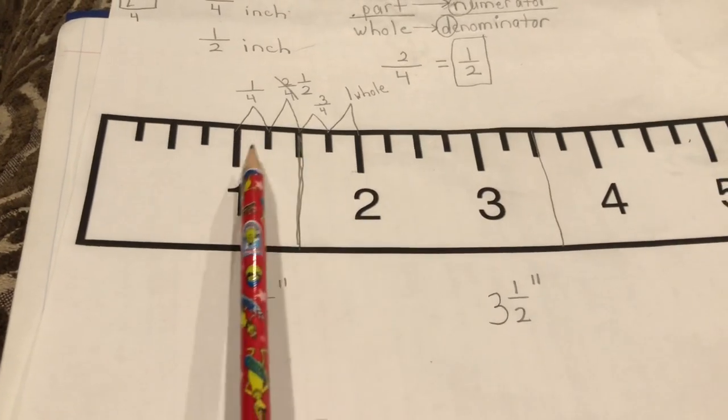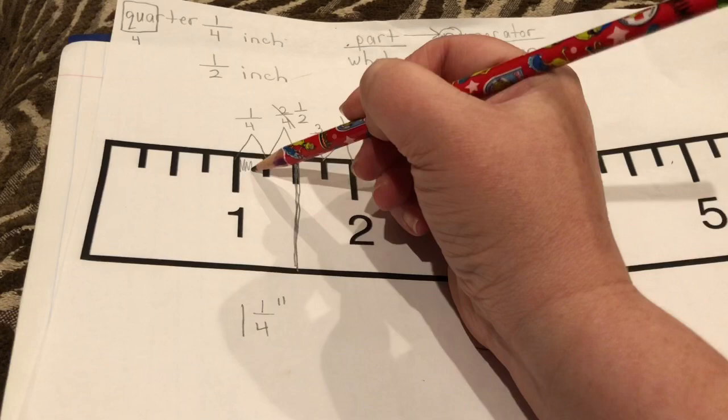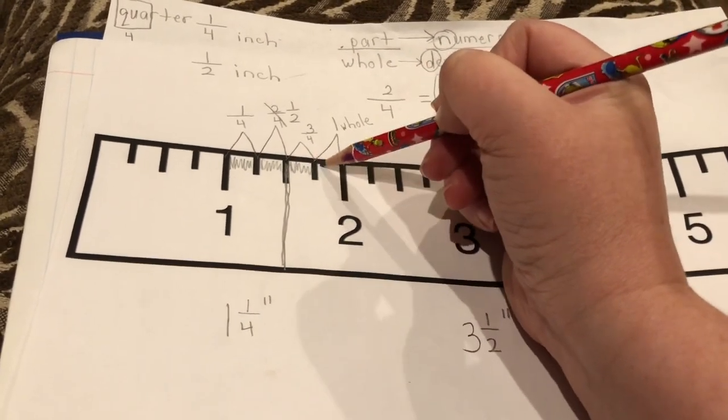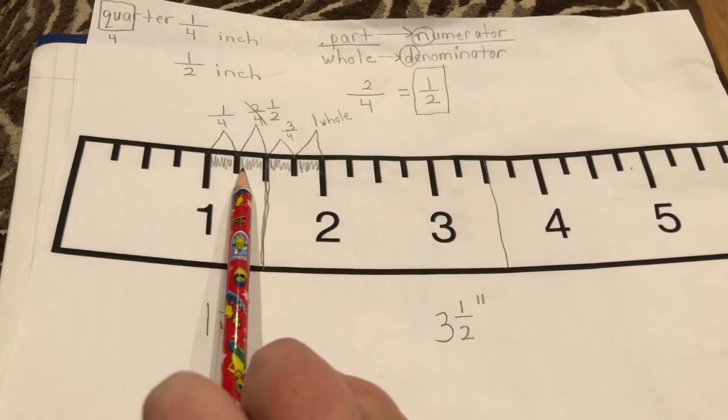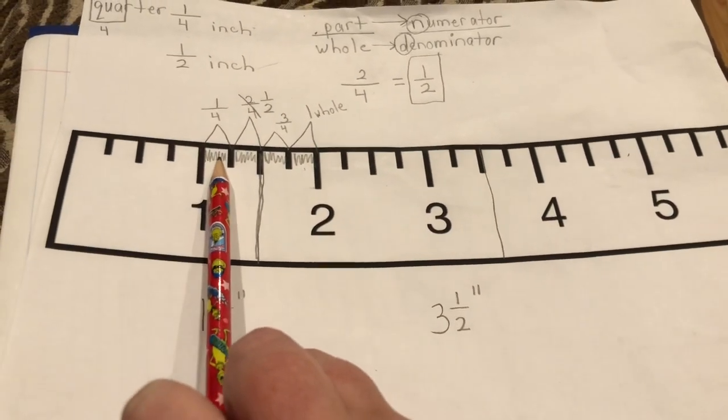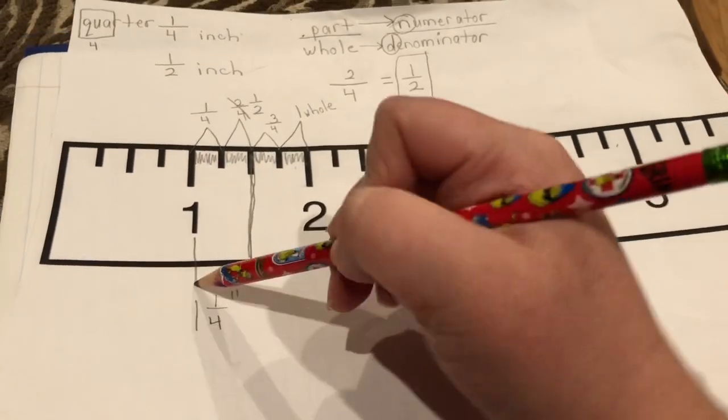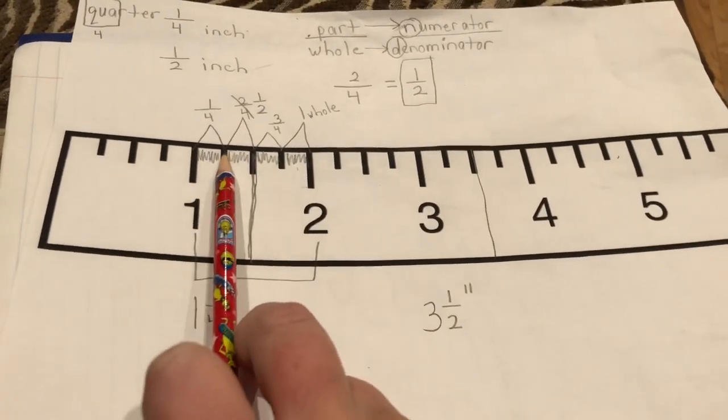Do you see how this has divided the inch into four equal sections? And that's why each piece that's this size is called a quarter because it would take four of this size to fill in this whole inch right here. So this would be one and one quarter.